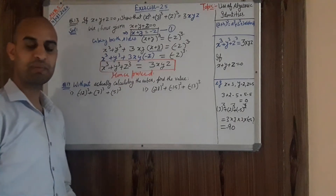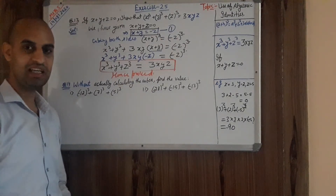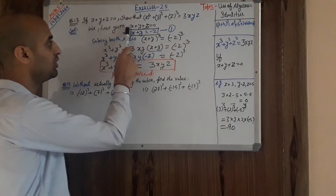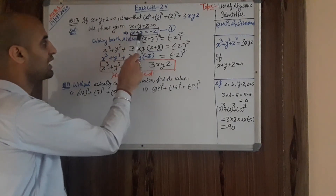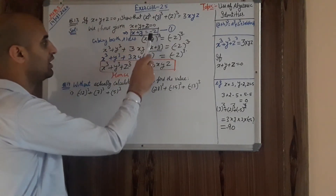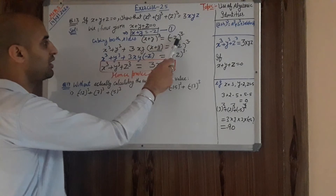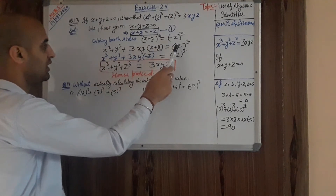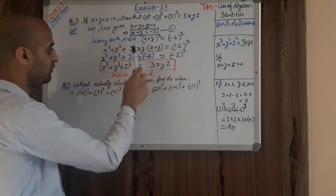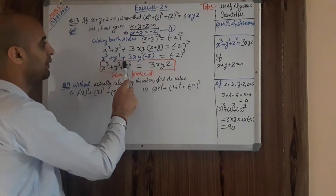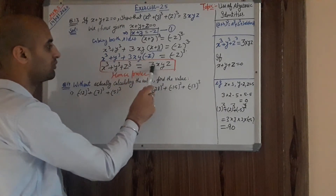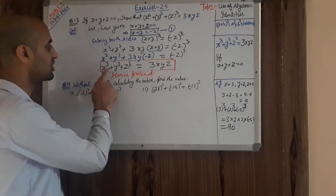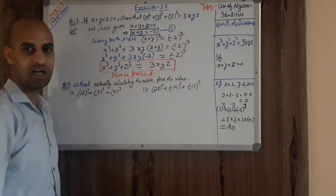This type of question is very interesting and easy to solve. First, write what is given. Then write x + y = -z. Cube both sides. Substitute x + y = -z wherever it appears, and shift terms to get x³ + y³ + z³ = 3xyz.